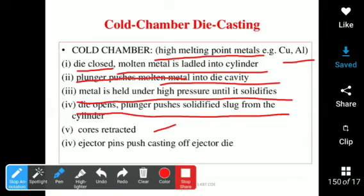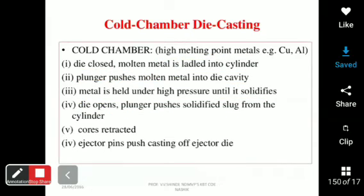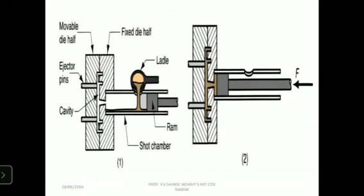Cores can be used to attain hollow shapes. Course retraction means cores are withdrawn. Ejector pins push the casting off the ejector die, so the complete casting is removed. Here you can observe the complete line diagram.